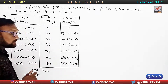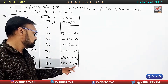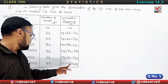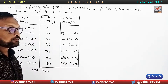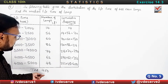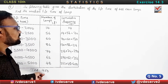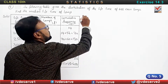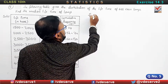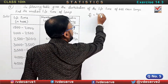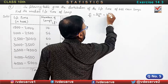In the cumulative frequency, the last one and the sum of the frequency are both the same. Now we have to find n by 2. N divided by 2 is equal to 400 divided by 2, which is equal to 200.